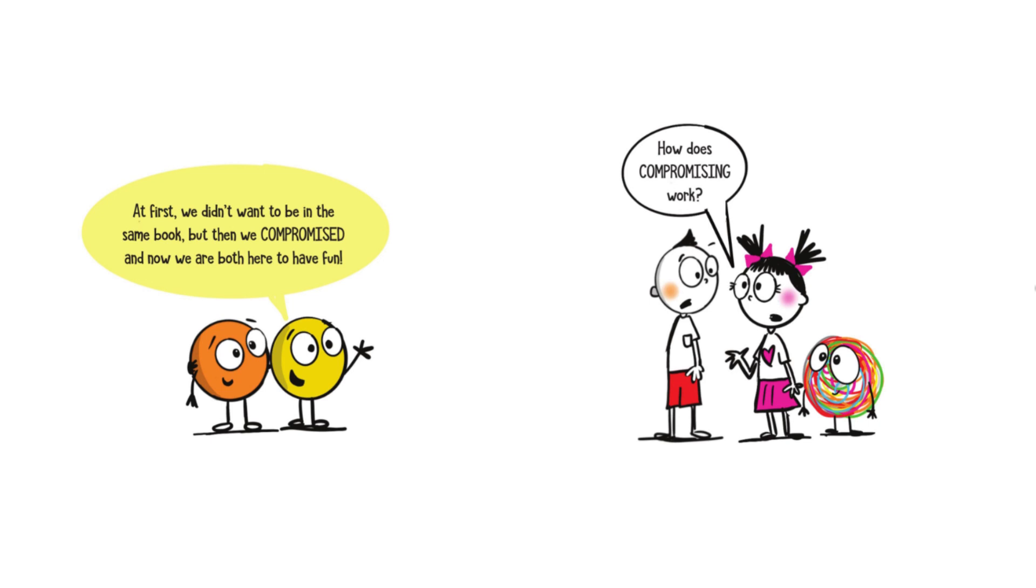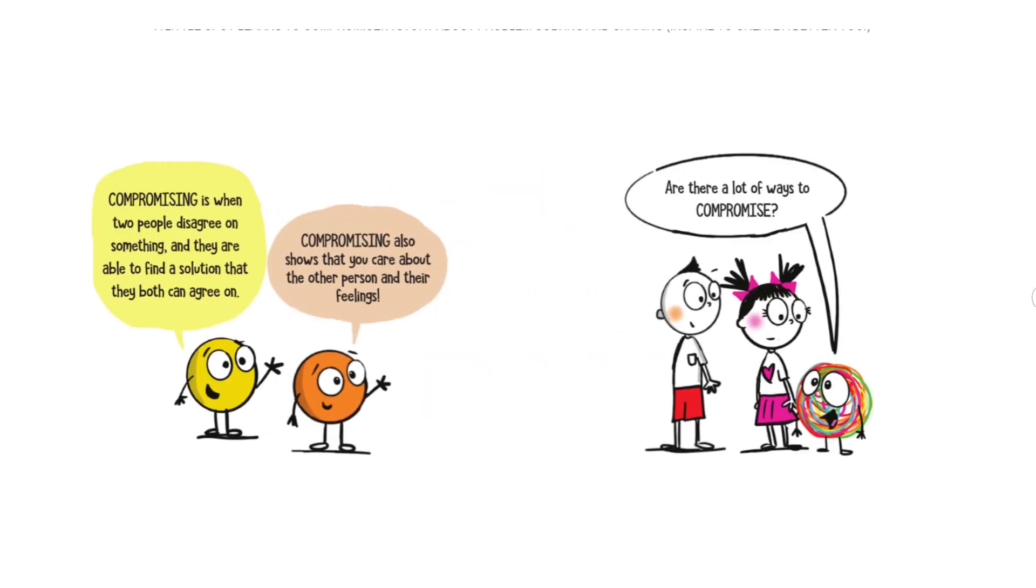How does compromising work? Compromising is when two people disagree on something and they are able to find a solution that they both can agree on. Compromising also shows that you care about the other person and their feelings.